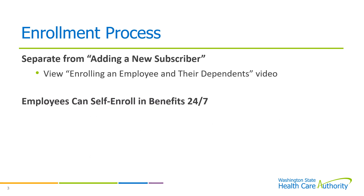Most of you are currently entering your new employees into Pay One at the same time that you receive the employees' enrollment forms. But with Benefits 24/7, adding a new subscriber and then enrolling that subscriber and their dependents into their elected benefit options will be two separate processes. Your employees will now be able to self-enroll in Benefits 24/7 under their own login. So it's a two-step process where you as the BA will enter some general information about them, and then the employee can go into the system and do their own enrollment. That's the reason we've broken these into two training videos.